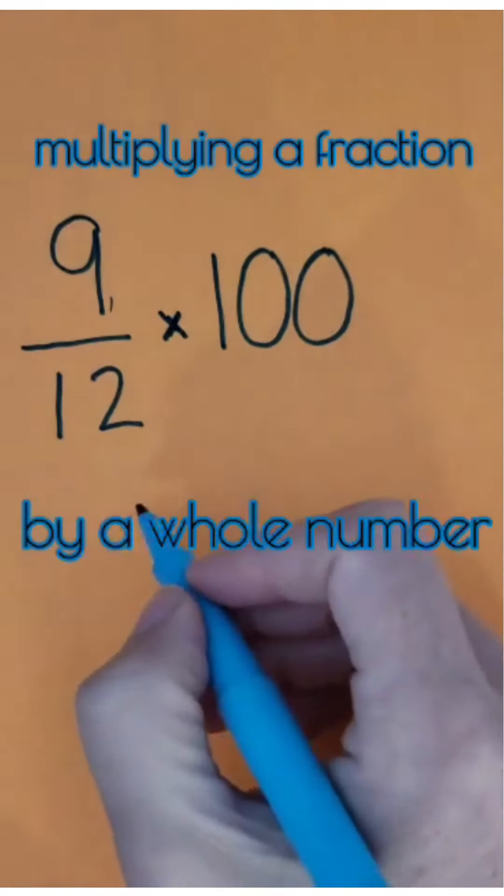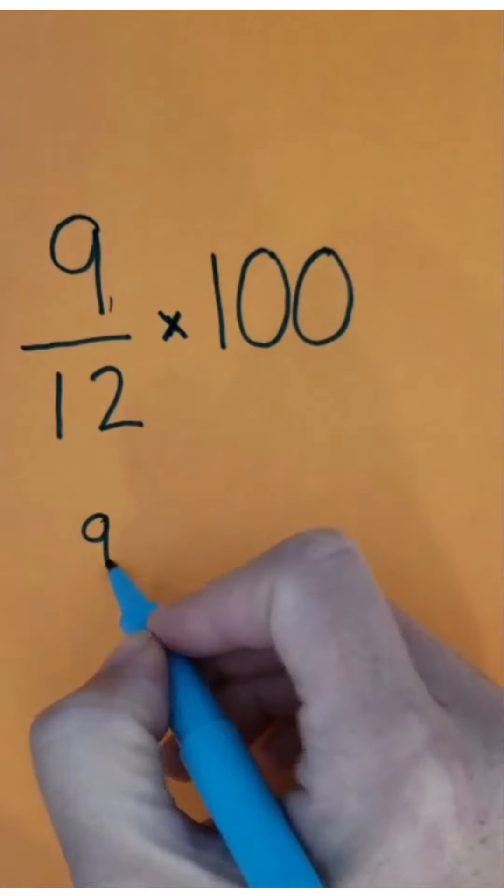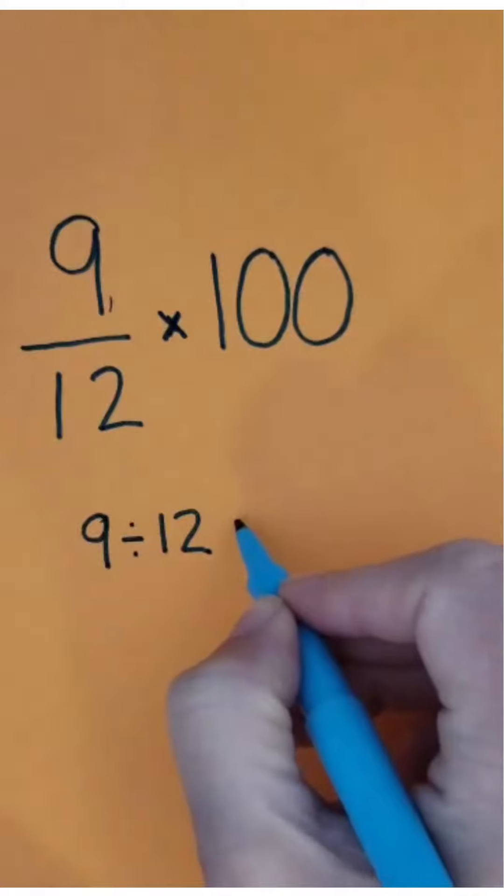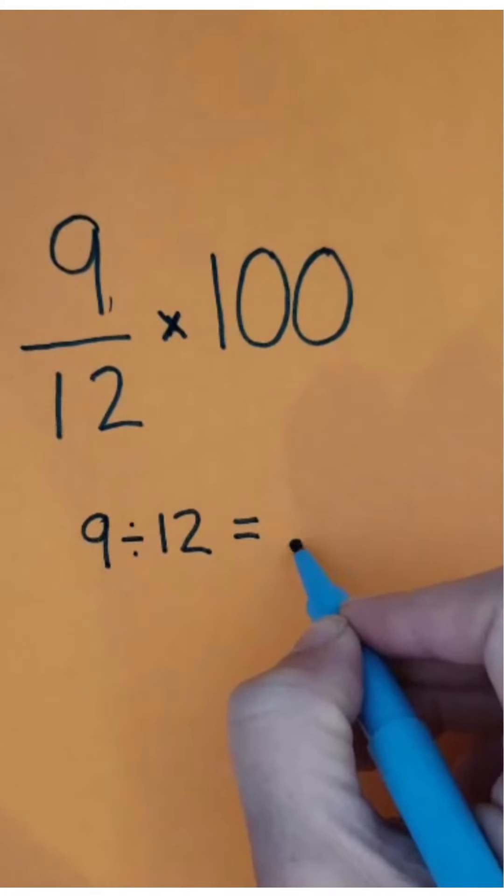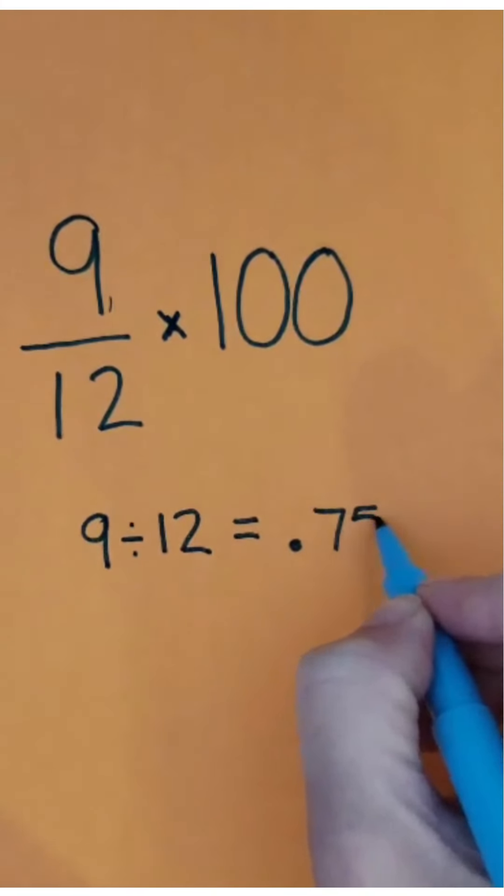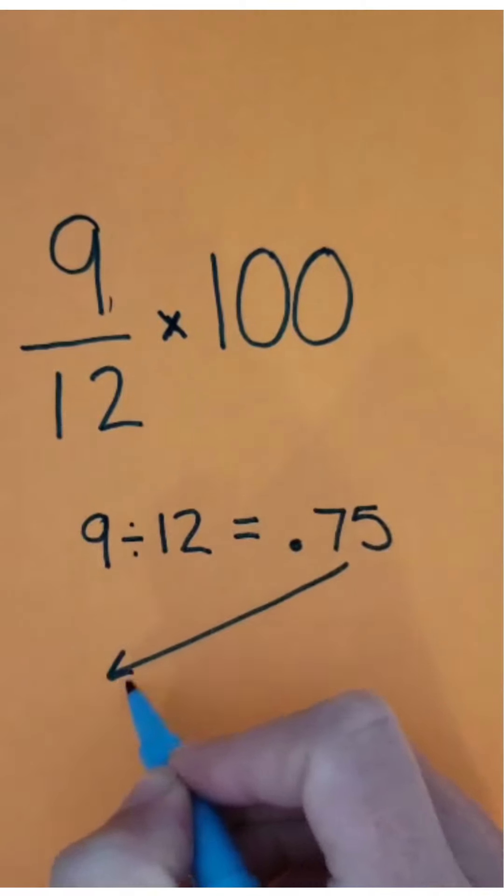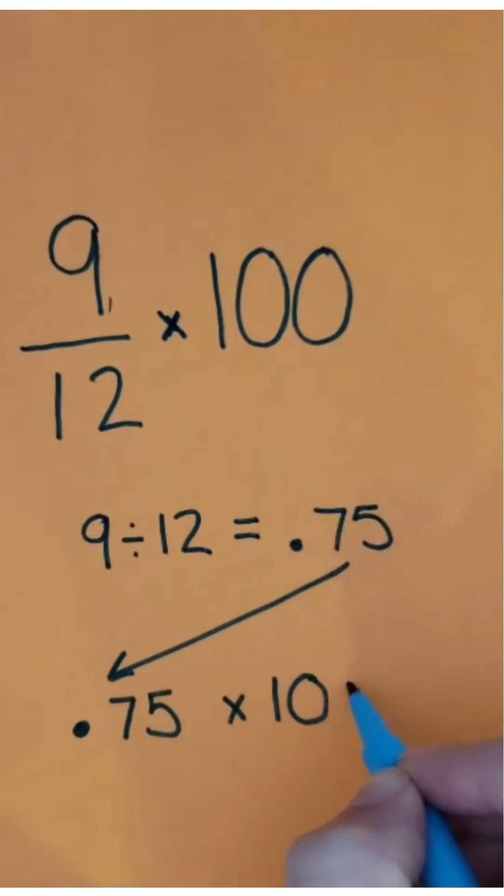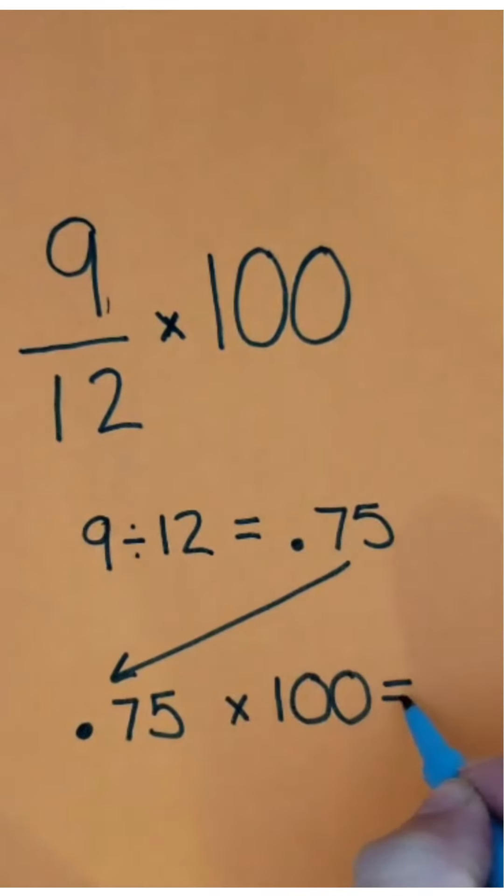The second way I could solve this is by dividing 9 divided by 12. Remember, a fraction shows division. I get 0.75, which is 75 hundredths, times 100 equals 75. 75 percent is my answer for both methods.